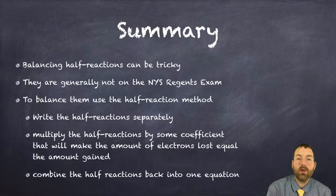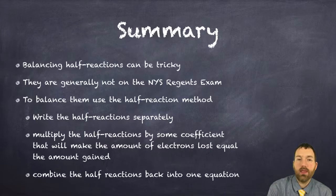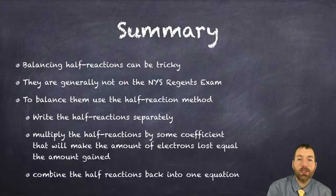The way we do this is we write the half reactions separately. We multiply the half reactions by some coefficient that will make the amount of electrons lost equal the amount gained. And then you just combine the half reactions back into one whole equation.